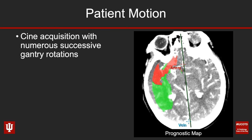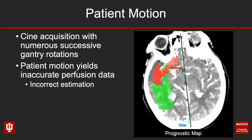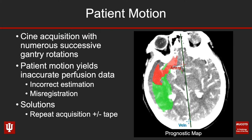First, I look for patient motion artifact. Perfusion CT is a CINE acquisition of numerous successive gantry rotations, so if the patient moves during image acquisition that can result in inaccurate estimation and calculation of ischemic penumbra and core infarction, and it can also result in misregistration artifact, where all of the areas of predicted ischemia and core infarction are shifted. To fix this problem, you may have to repeat the image acquisition, and it may be helpful to tape the patient's head in place.